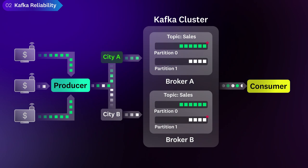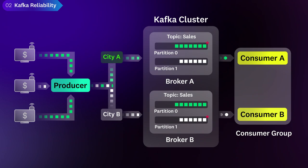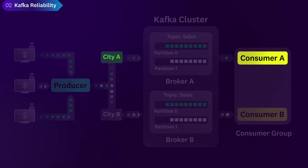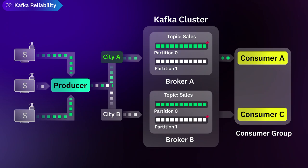The consumer side of Kafka also has a fail-safe mechanism. You can create multiple instances of a consumer application to read messages from the same topic. Together, these instances make up a consumer group. Each partition is assigned to one consumer in the group. In our example, one consumer might process sales from city A, and another consumer might process sales from city B. Businesses can choose to add extra consumers to a group — these excess consumers sit idle but will seamlessly take over data processing if any of the active consumers fails. Thanks to the offset, a fallback consumer will know where to start reading incoming messages.